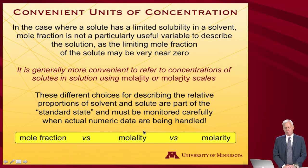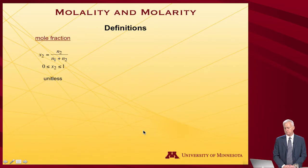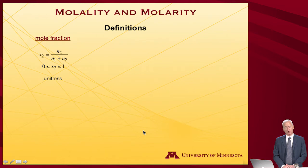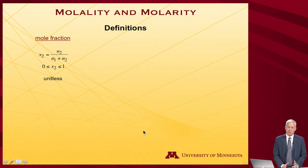Let's consider the three possibilities: mole fraction, which we've seen up till now, molality, and molarity. The mole fraction x sub 2 — making two my solute component — is the number of moles of component two divided by the total number of moles in the system. It's a unitless quantity (moles over moles) and it can span from zero to one: zero when there's none of the minority component present, one if it's the pure phase.